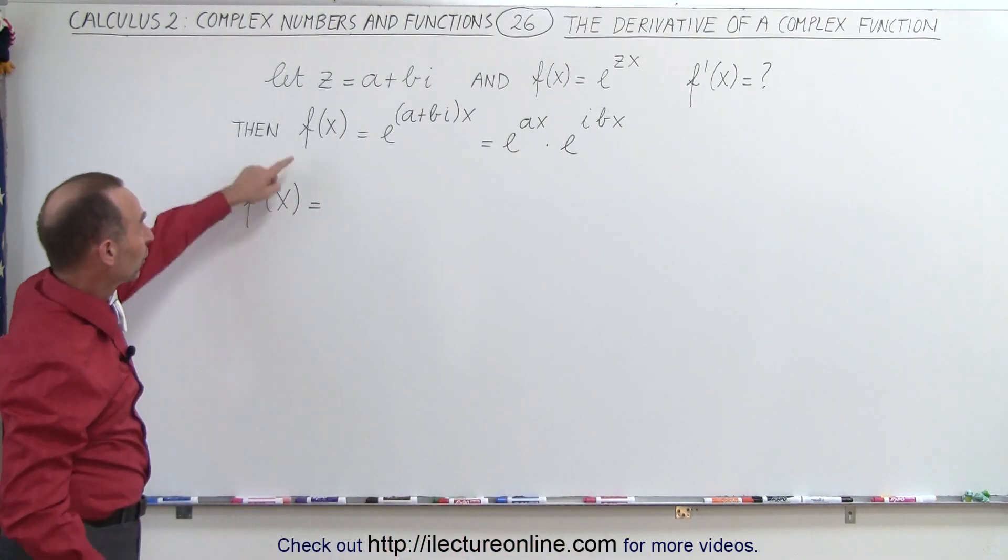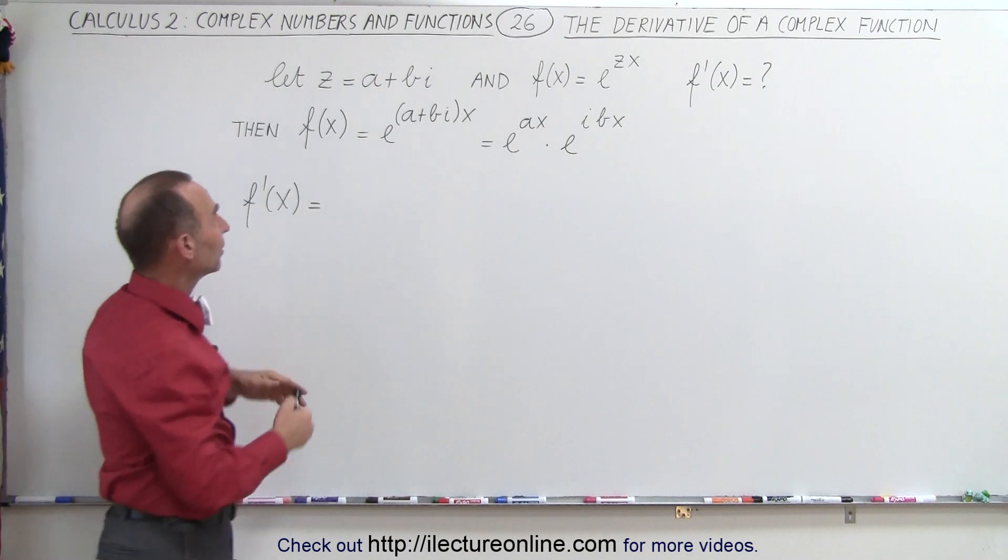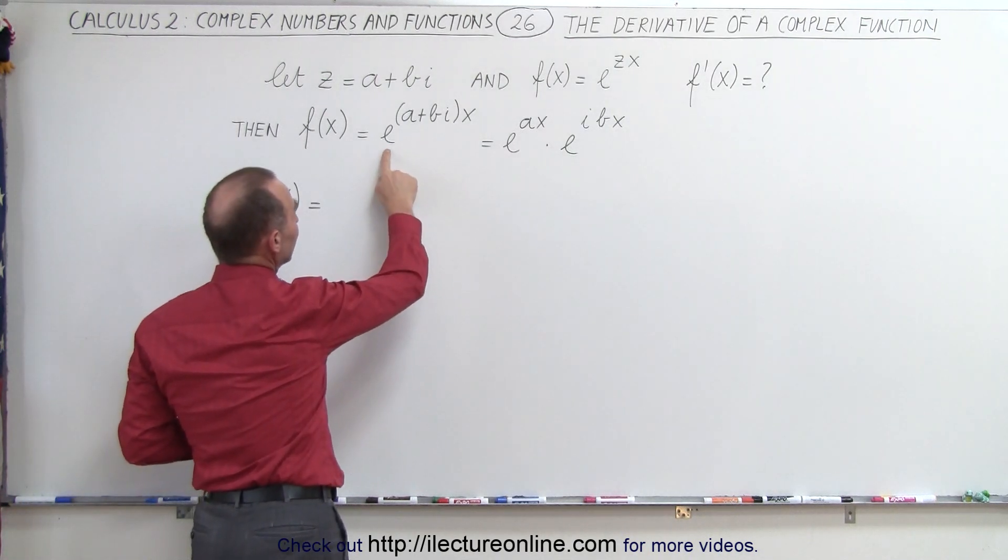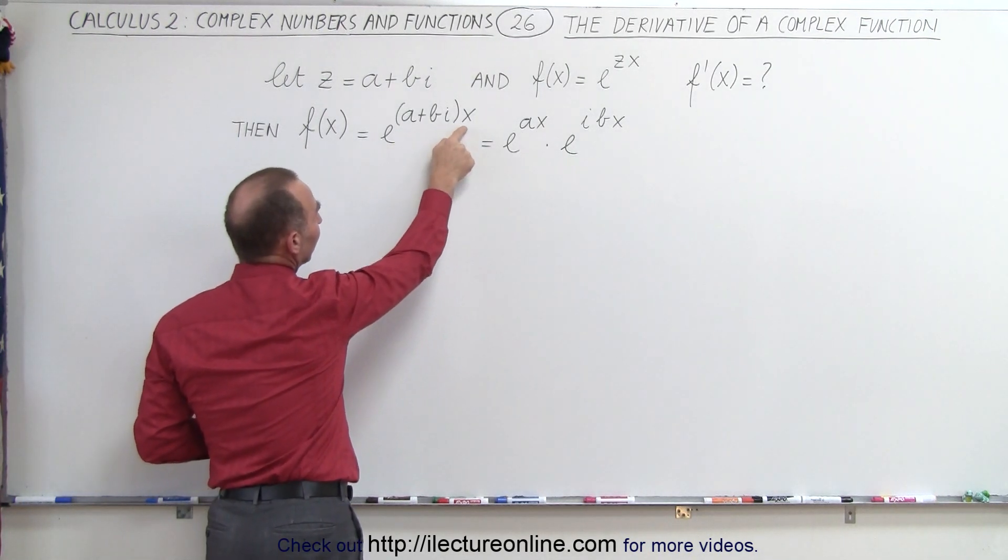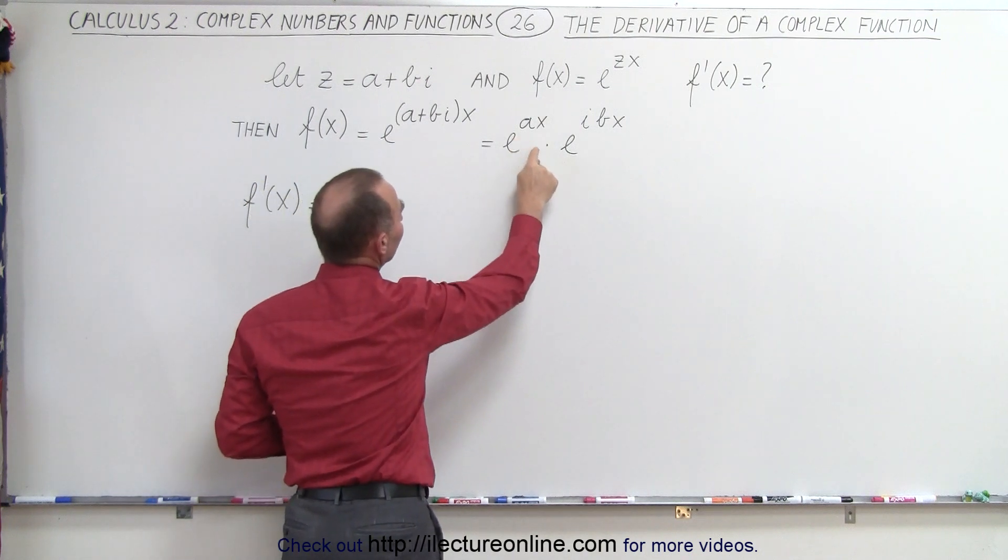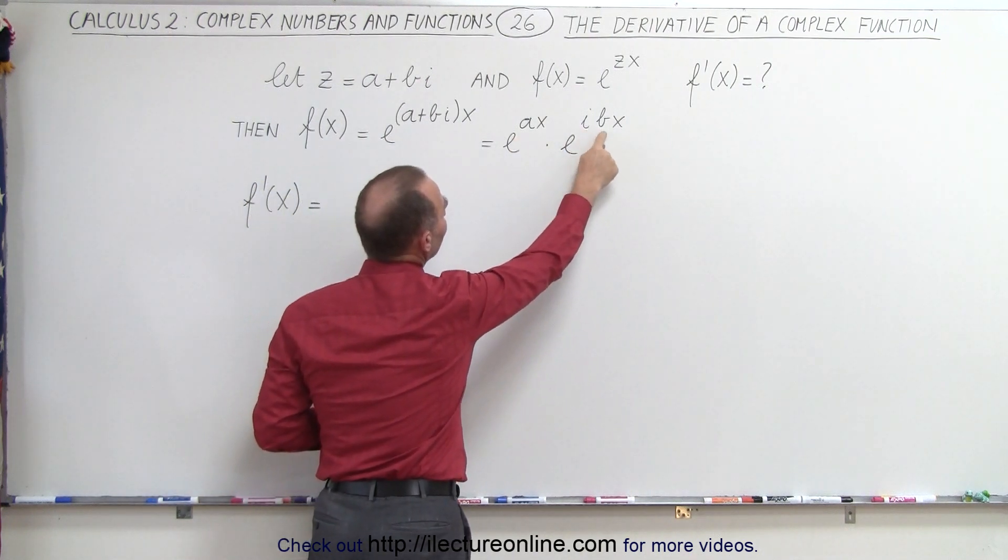Now what we're going to do is take our function and split it up like this. So instead of writing e to the a plus bi times x, we're going to write it as e to the ax times e to the ibx.